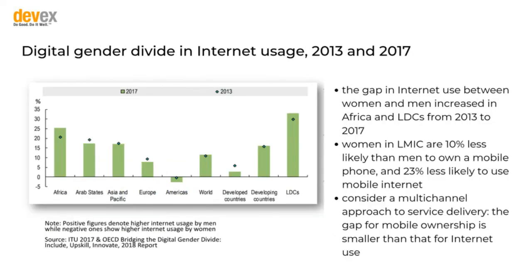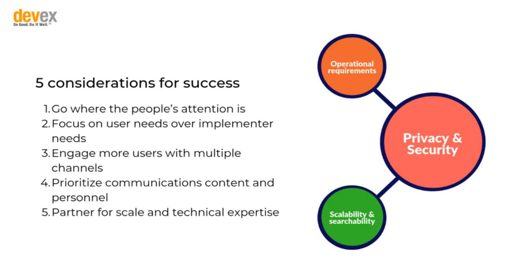This slide talks about gender — the gap in internet use between women and men has increased in Africa. If you're introducing one of these programs, there really is a large gender divide. Phones are often shared, and ultimately you have to do no harm — you can't really guarantee that the person on the other end of the phone is always who you think it is. You have to be very aware of your messaging. A multi-channel approach to service delivery means you can't just pick one channel and assume it's going to work for everything.